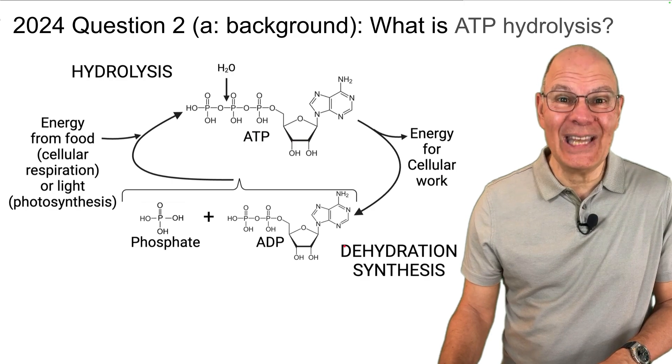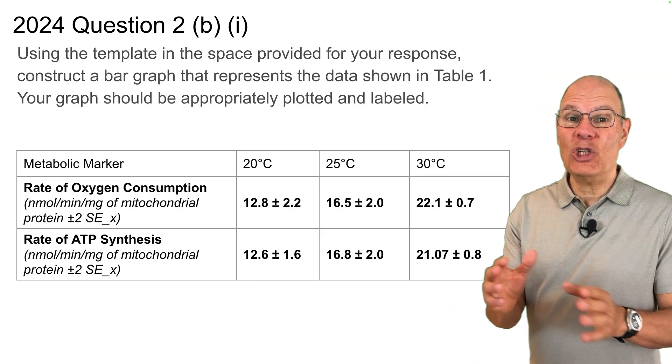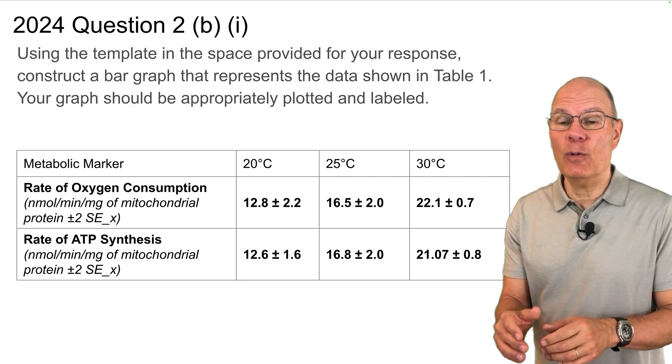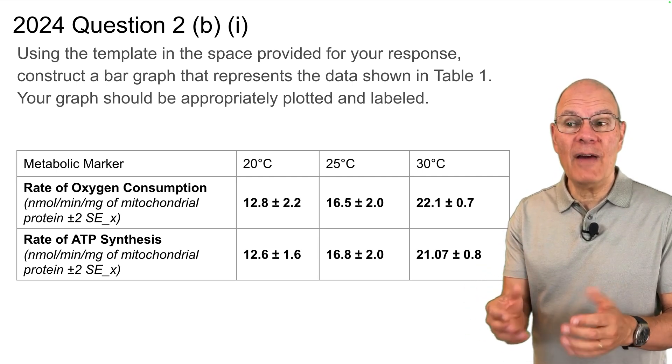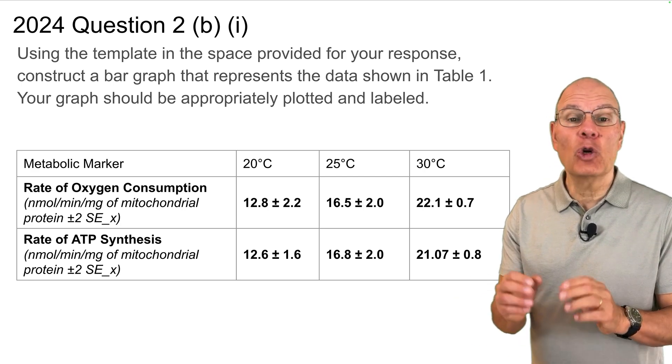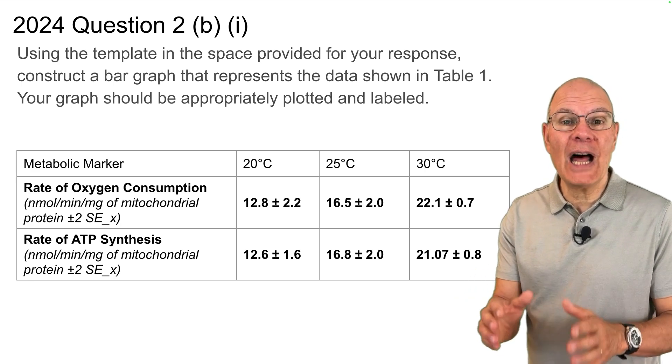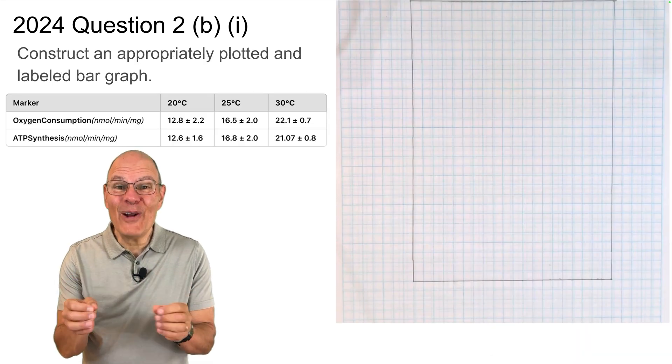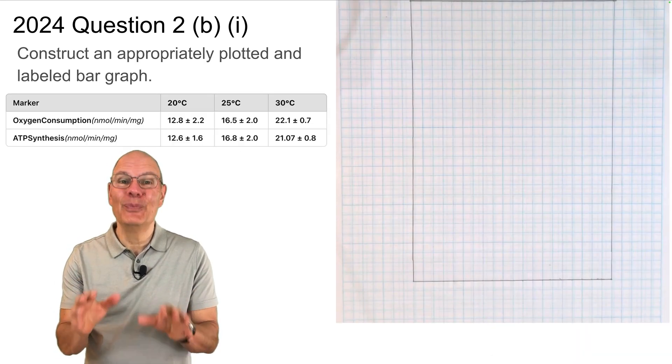Now on to question 2b, part 1. Using the template in the space provided for your response, construct a bar graph that represents the data shown in table 1. Your graph should be appropriately plotted and labeled. Graphing data like this is a very important AP bio skill. Let's do it.